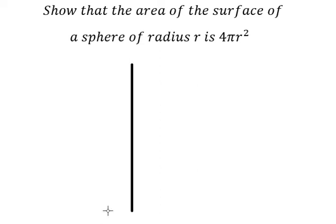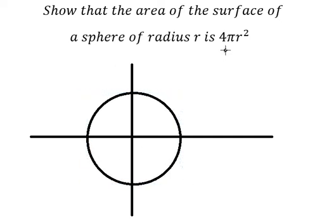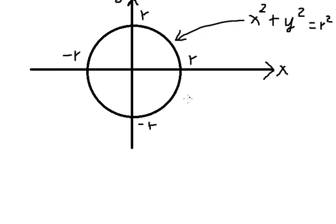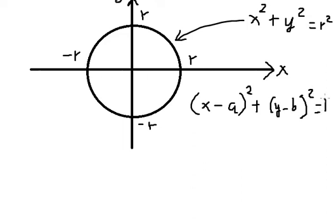First, we need to write about the circle, and the radius is R. The equation of this circle is x squared plus y squared equals R squared. The standard form of a circle is x minus a, to the power of 2, plus y minus b, to the power of 2, equals capital R squared.